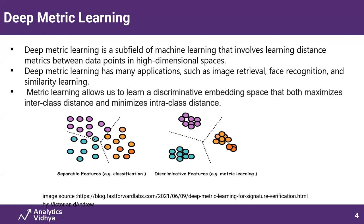Face recognition systems also work in a similar way. Any face recognition system consists of two components: face detection and face recognition. Once you detect the face, the detected face is sent to a feature extractor model that produces an encoded vector. If you have already stored vectors of known faces, the system finds the distance between the query vector and all stored vectors — the nearest vector, keeping some threshold, is the recognized face. This is how deep metric learning helps in solving these cases.